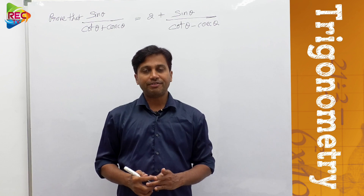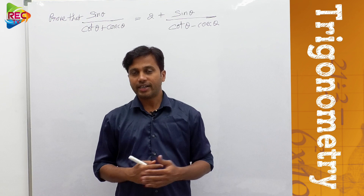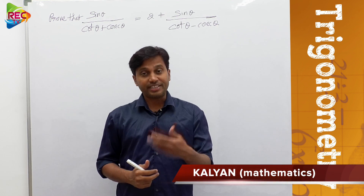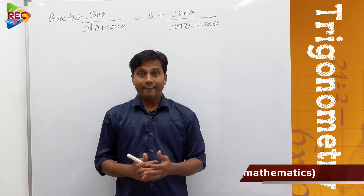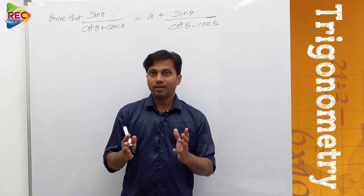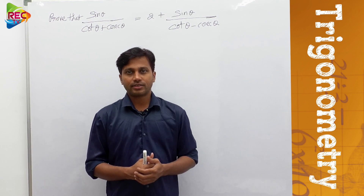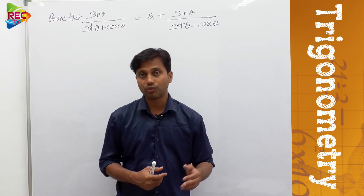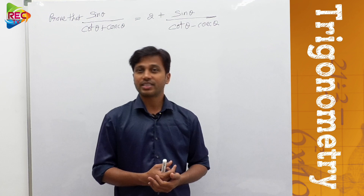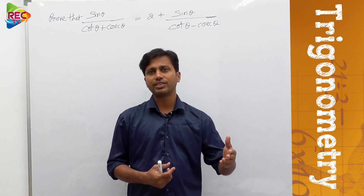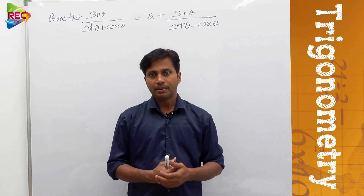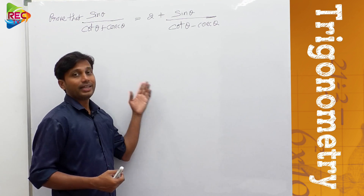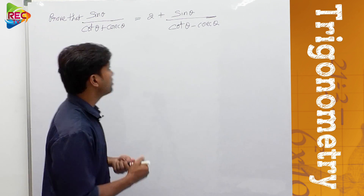Hello students, welcome to REC TV. This is Kalyan and I'm the faculty of mathematics and physics. In this session, we are going to solve one different problem on trigonometric identities — those three identities: sin²θ + cos²θ = 1, sec²θ - tan²θ = 1, and cosec²θ - cot²θ = 1. Based on them, we are going to solve one more problem.